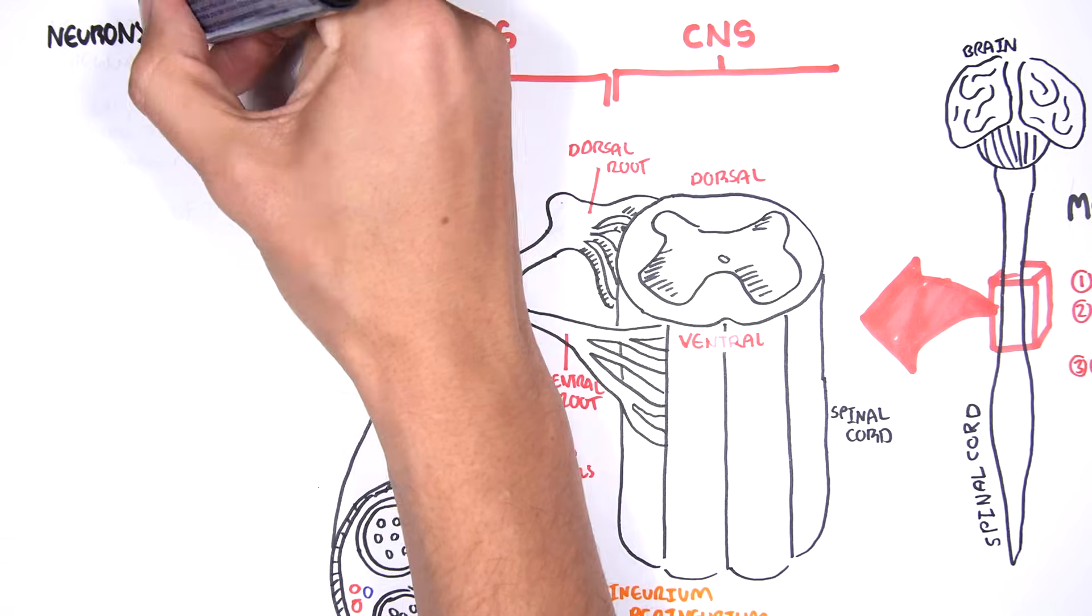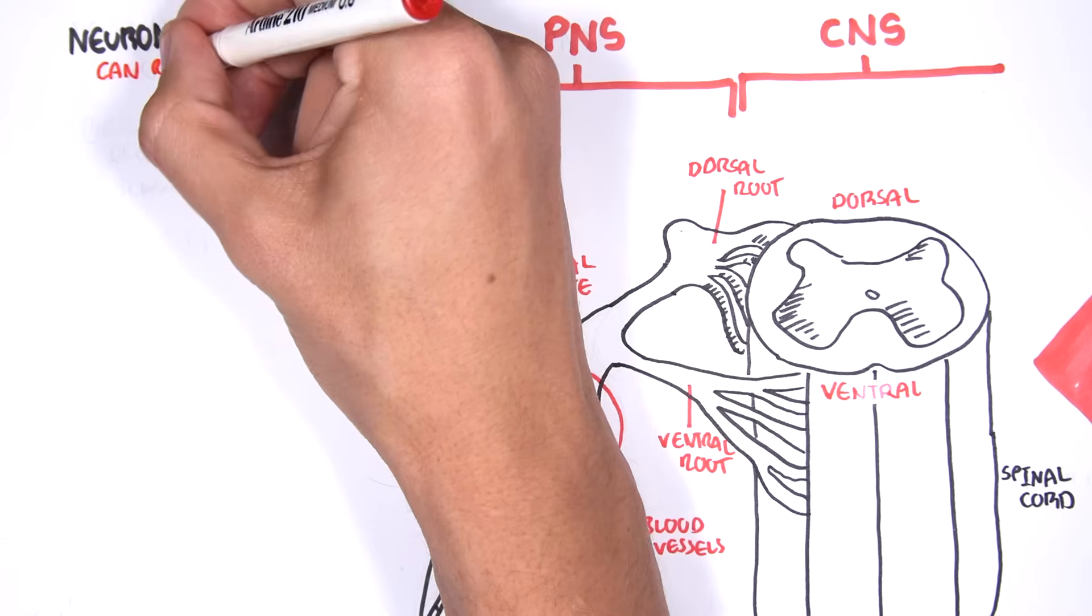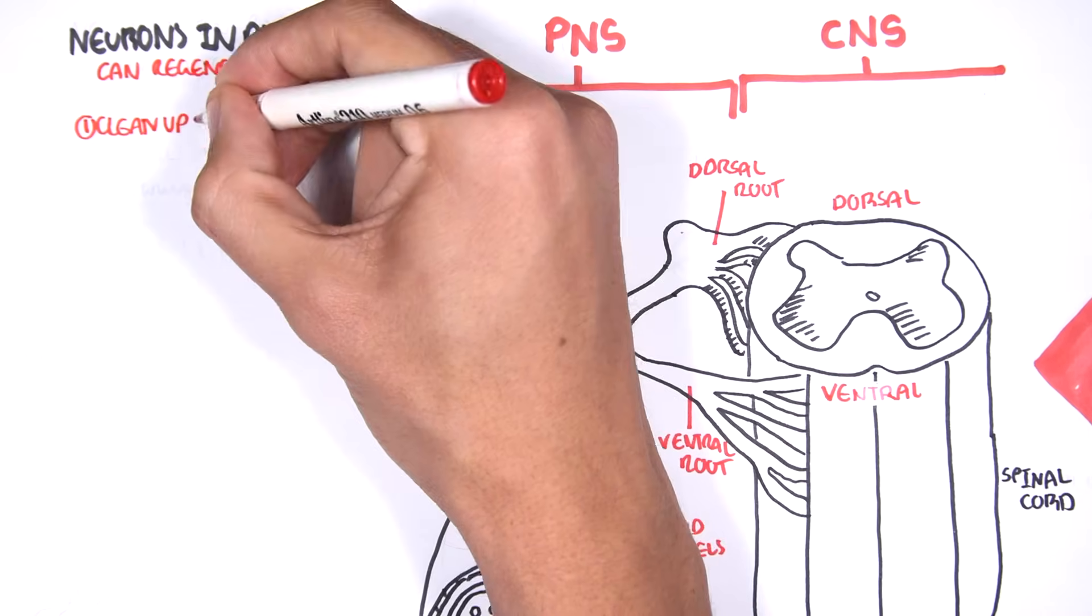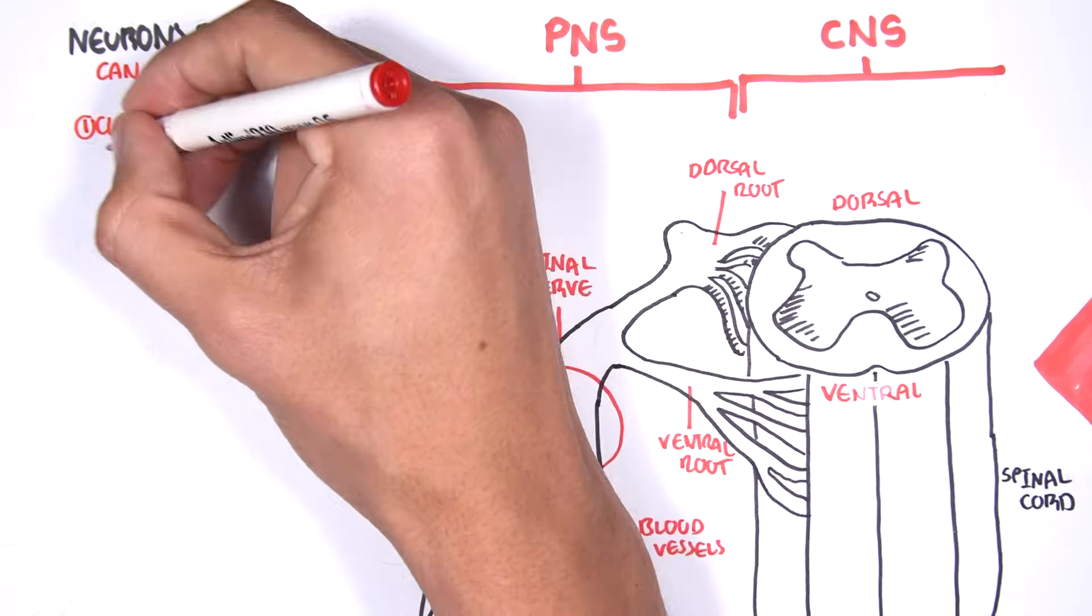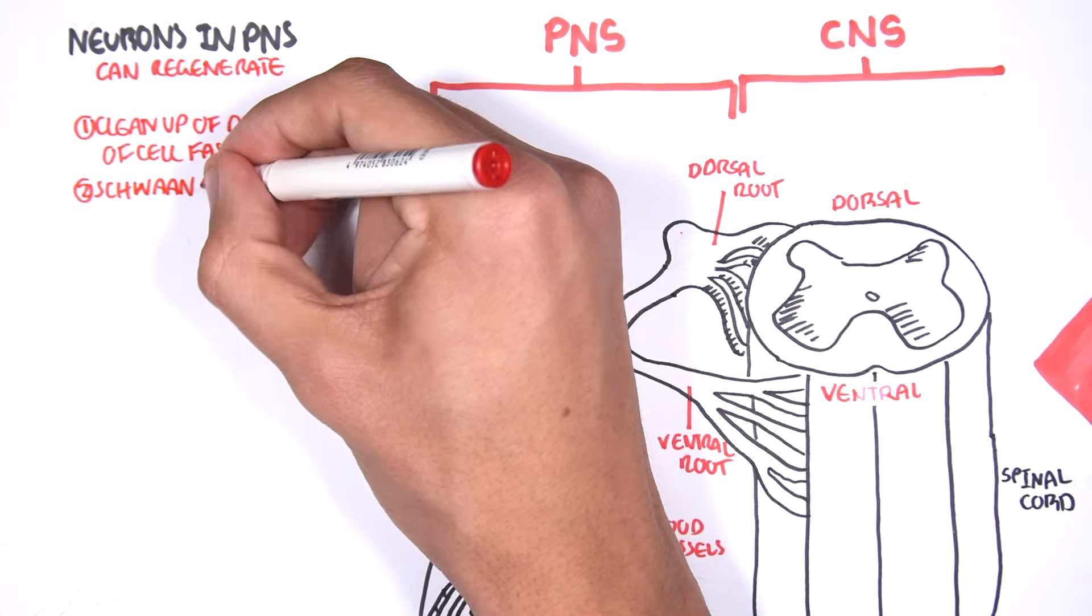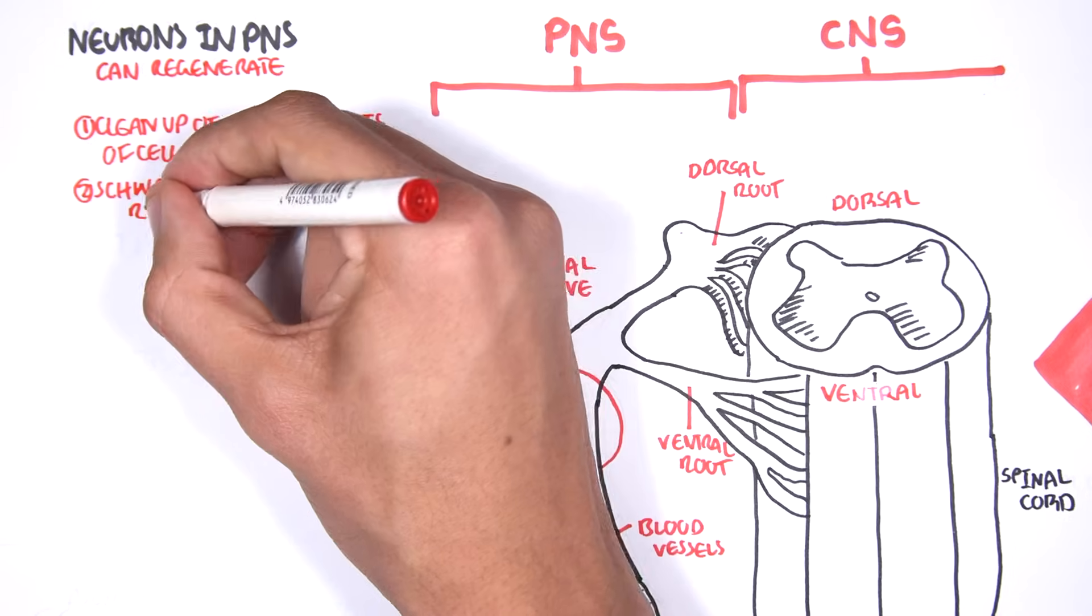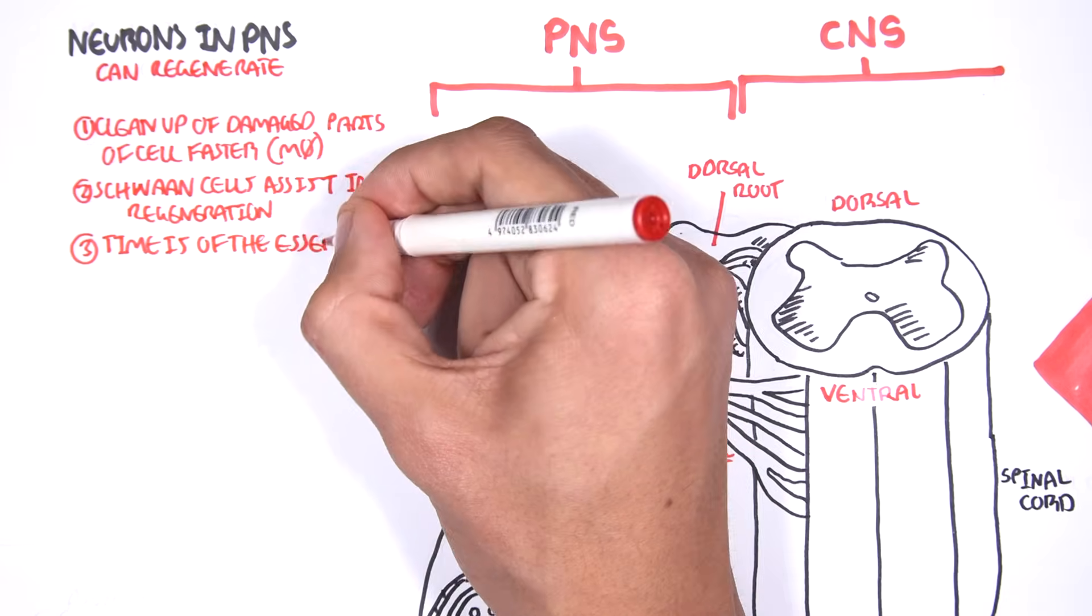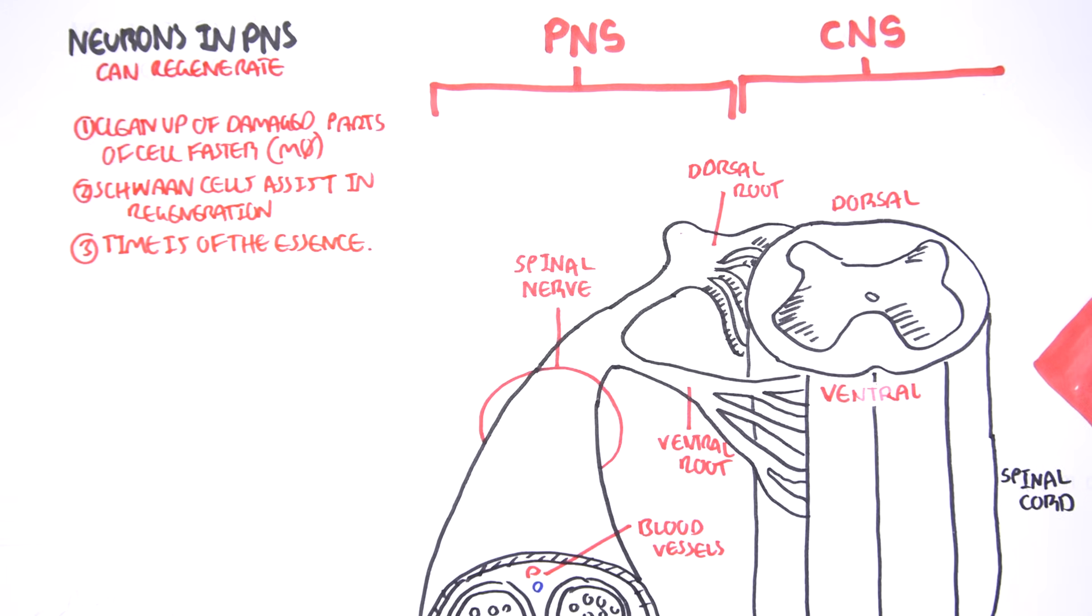However, neurons in the peripheral nervous system, or PNS, can regenerate. And this is because clean up is a lot faster in the peripheral nervous system by macrophages, allowing for parts of the neuron that are able to regenerate, to regenerate. Secondly, Schwann cells actually assist in the regeneration process. And thirdly, time is of the essence. So, if we can clean up parts that cannot regenerate, regeneration can occur. However, time is of the essence.